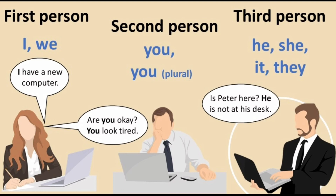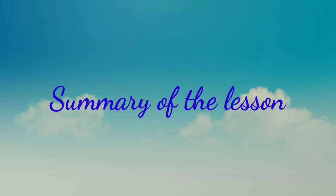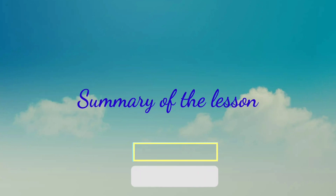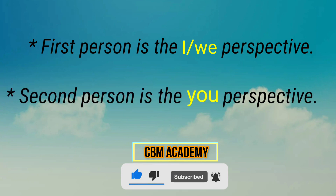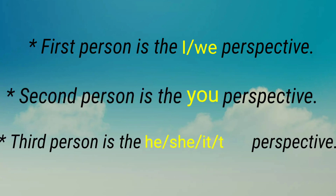Now let's see about third person. Look at the example: 'Is Peter here? He is not at his desk.' The speaker is making a statement about a third party — 'he' — which is third person. To summarize: first person is the 'I' or 'we' perspective, second person is the 'you' perspective, and third person is the 'he,' 'she,' 'it,' or 'they' perspective.